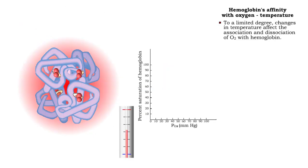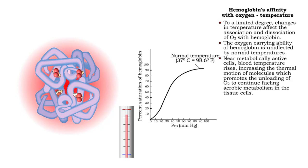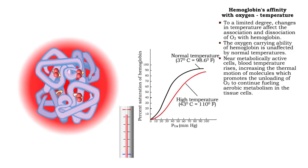To a limited degree, changes in temperature affect the affinity of hemoglobin for oxygen. The oxygen-carrying ability of hemoglobin is unaffected by normal temperatures. However, near metabolically active cells, blood temperature rises and decreases the affinity of hemoglobin for oxygen.